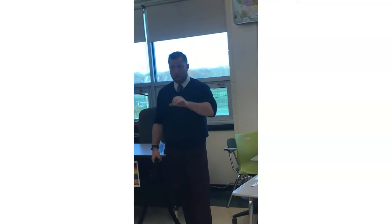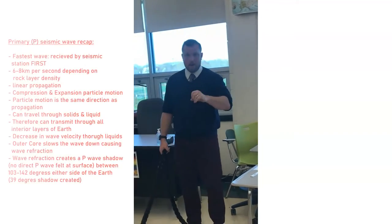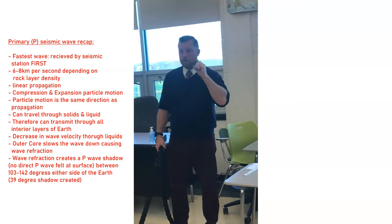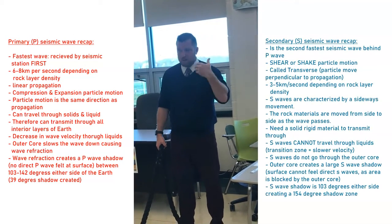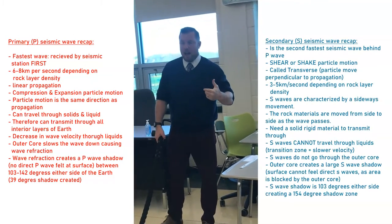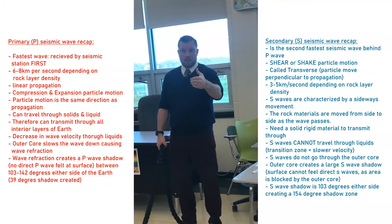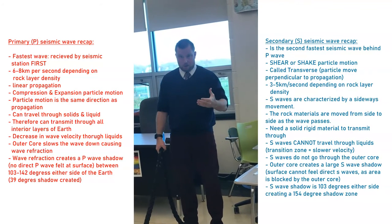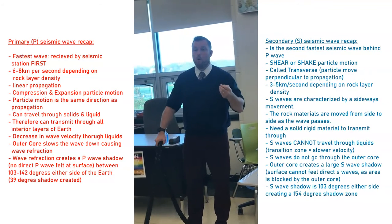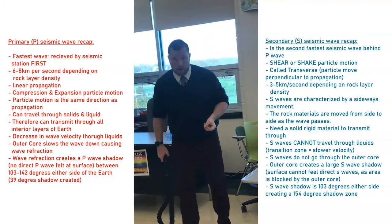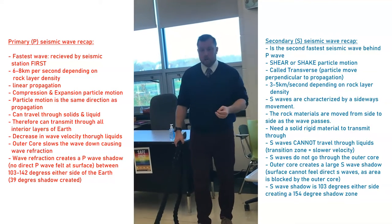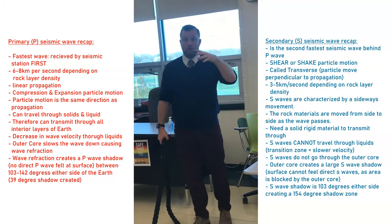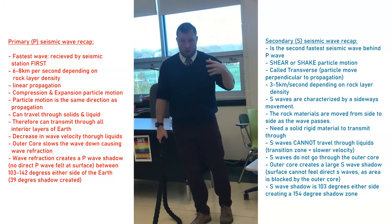We've already looked at both the P wave and S wave for earthquakes. Those are the two waves that come out first at the fastest speed, and you can record them on seismic stations first. They're called body waves.